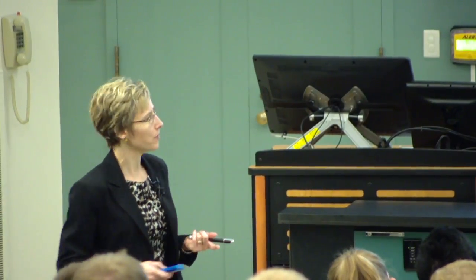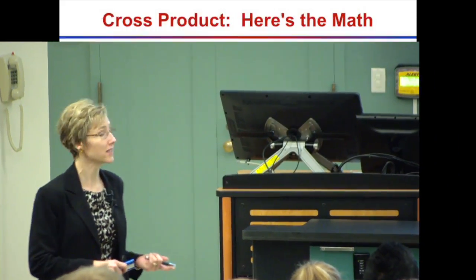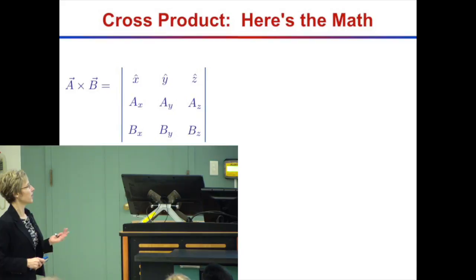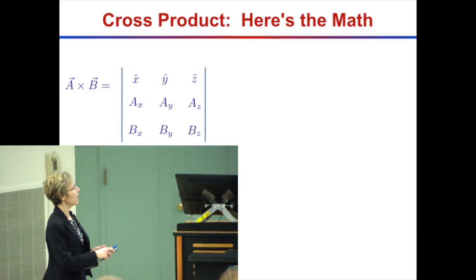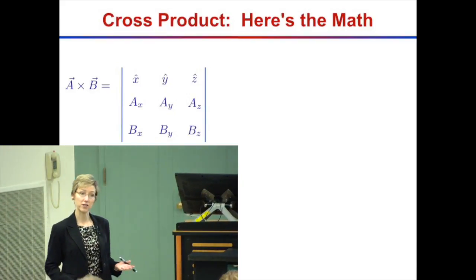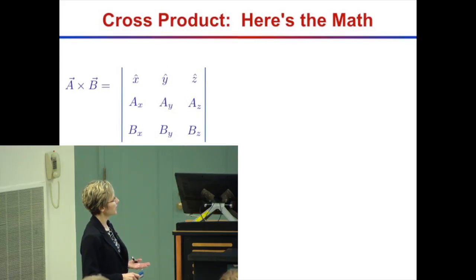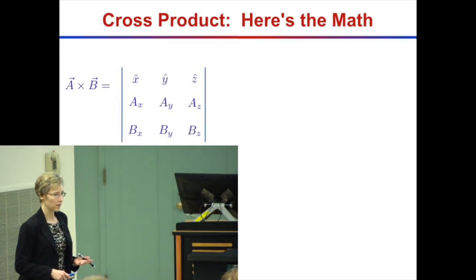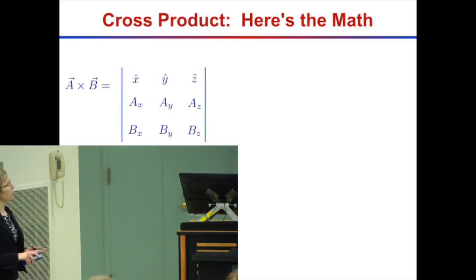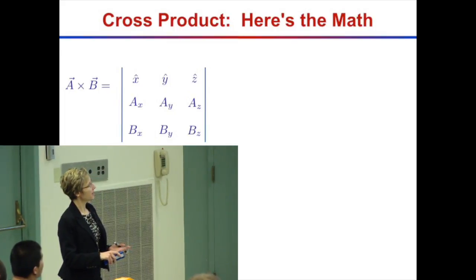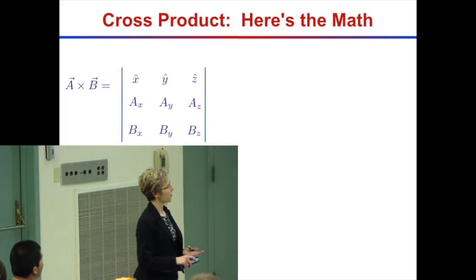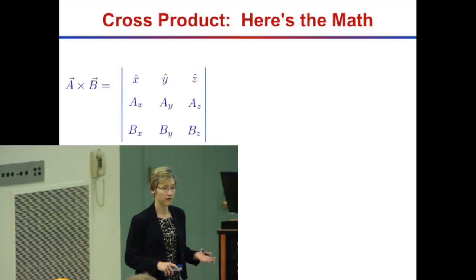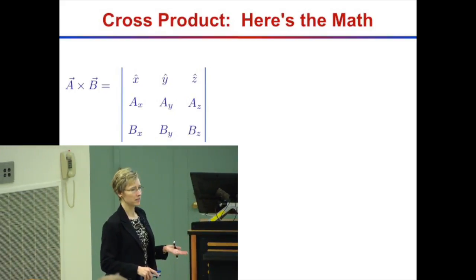Here's the math. We can use a shorthand for this in terms of the determinant of a matrix. For vectors a and b, set up a 3×3 determinant with x-hat, y-hat, and z-hat on top; the components ax, ay, az in the next row; and bx, by, bz in the third row. Then take the determinant.